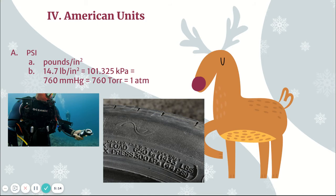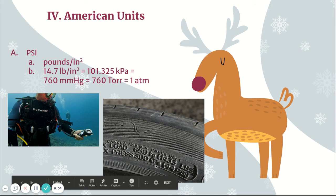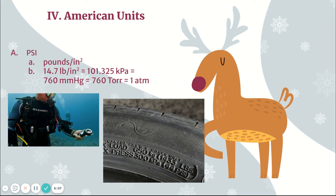In American units, we use PSI — pounds per square inch. Pounds and inches are not used in science, so we also don't use PSI in science. However, if you're a diver, the air in your tank is measured in PSI, shown on a dial called a secondary gauge. We also use PSI for tires — if you look closely at your tires there will usually be a PSI label, and sometimes a kPa label as well.